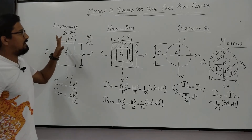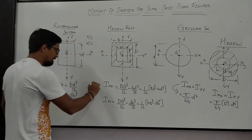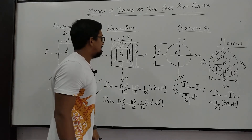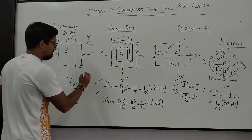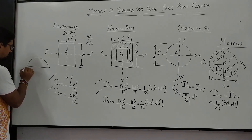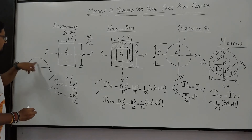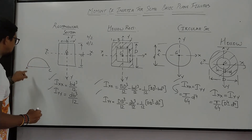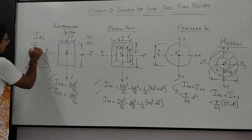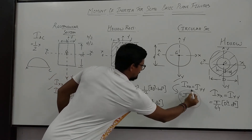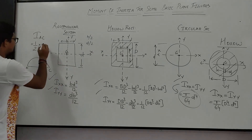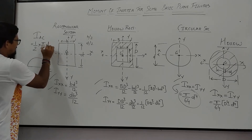So these are some basic plane figures and moment of inertia relations for them. Now, for a semicircular section — suppose this is AC, the base. For a semicircular section, if you want the moment of inertia about AC, it is half of what we have for a circular section. Since the circular section gives π by 64 D⁴, the moment of inertia about the base AC is half of that.